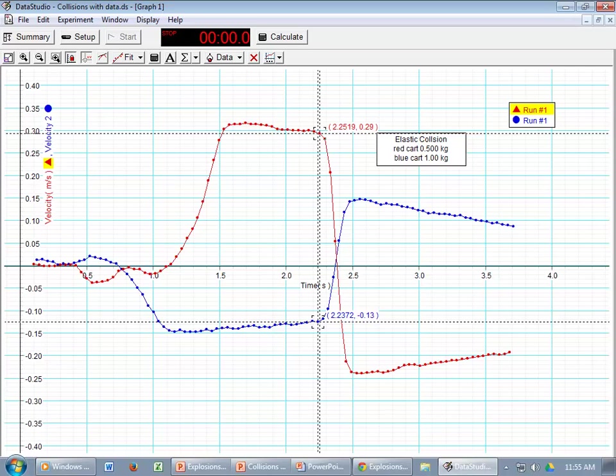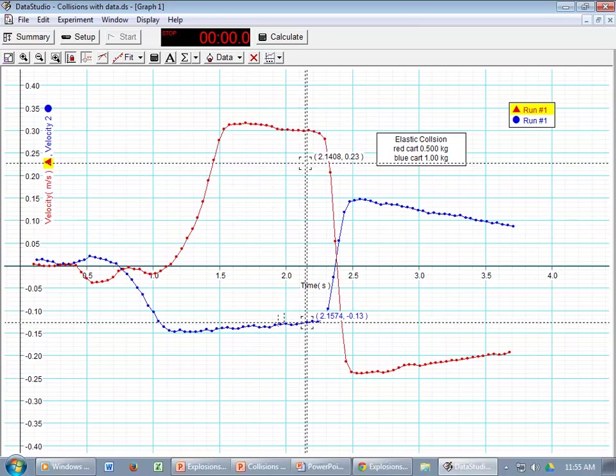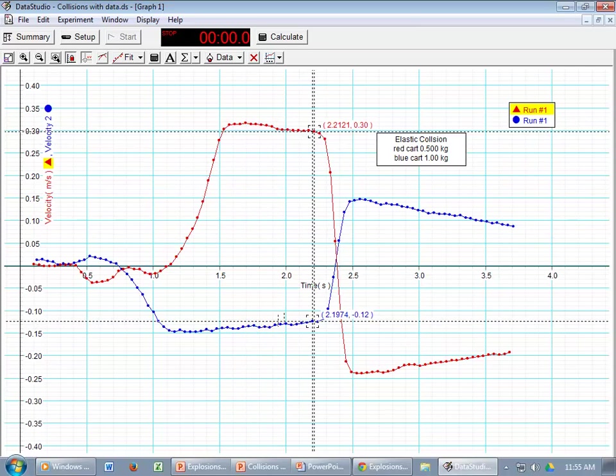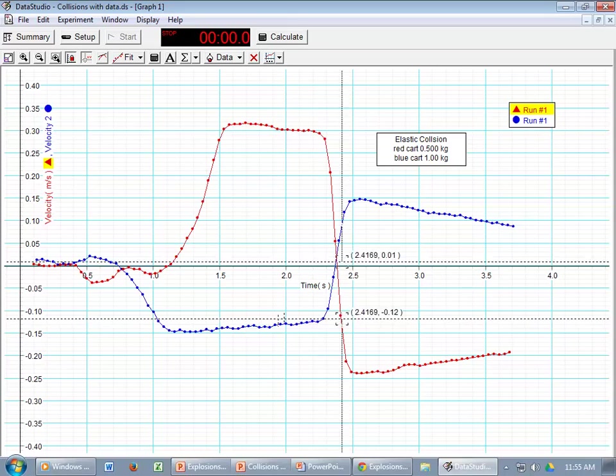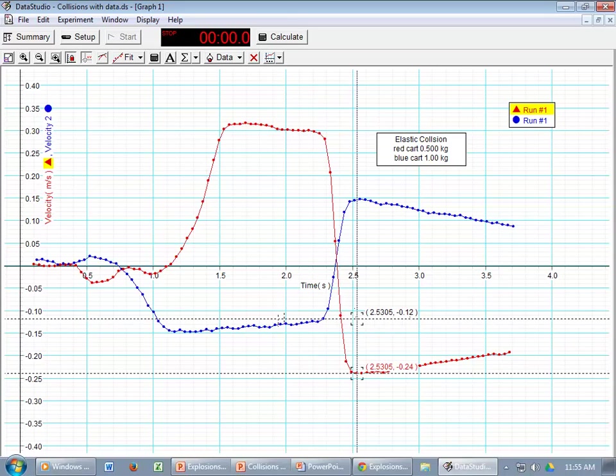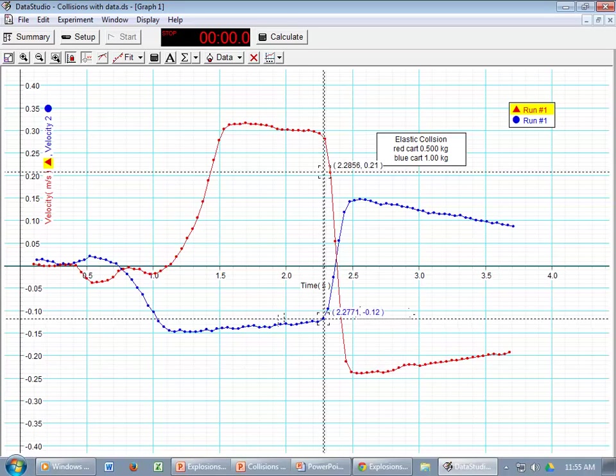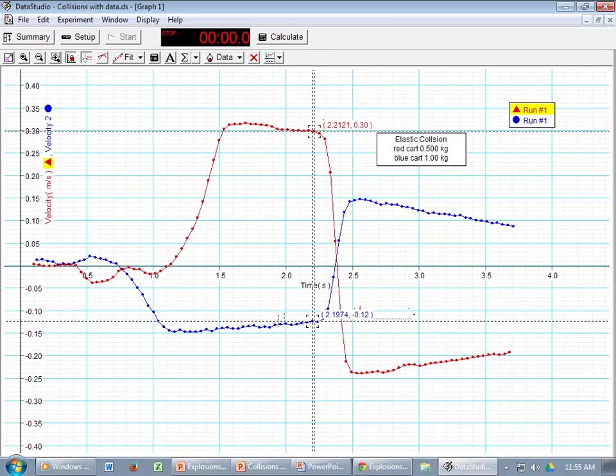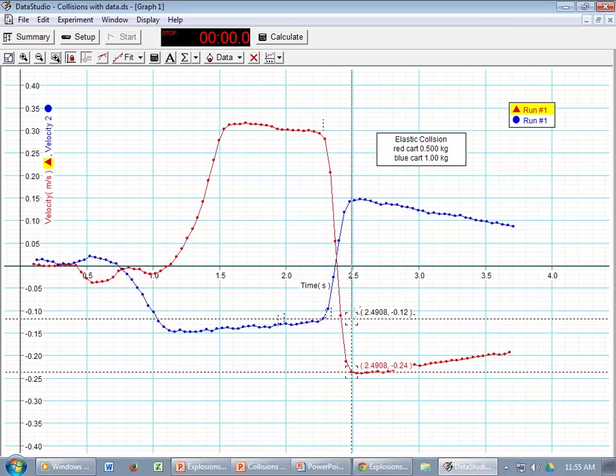So what were those velocities? Well you'll notice up here the red is lit up. So I can grab this and move it around. I can pick a point. So here is the velocity, 0.30, just before the collision for the red cart. Go down here. Negative 0.24 is the velocity after the collision for the red cart, or the final red cart velocity. So initial red cart velocity, final red cart velocity.